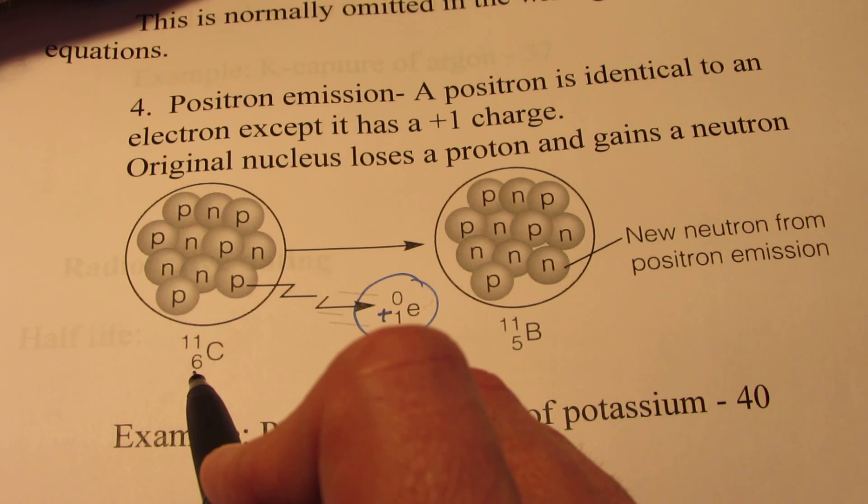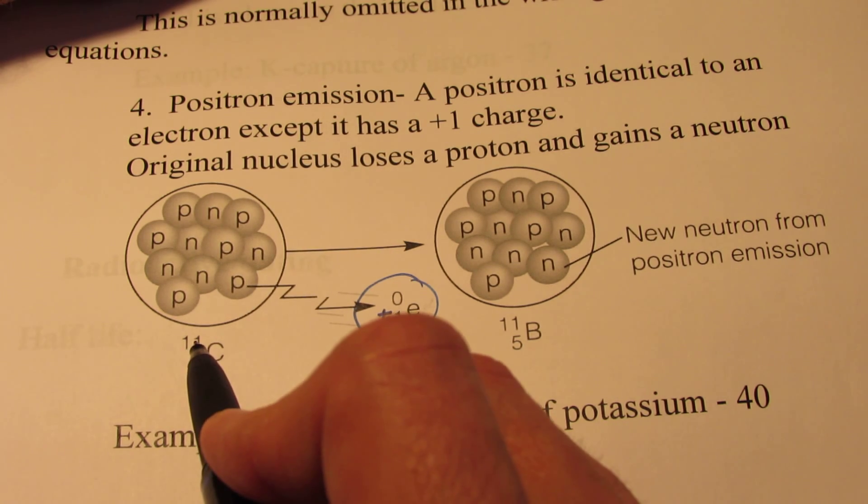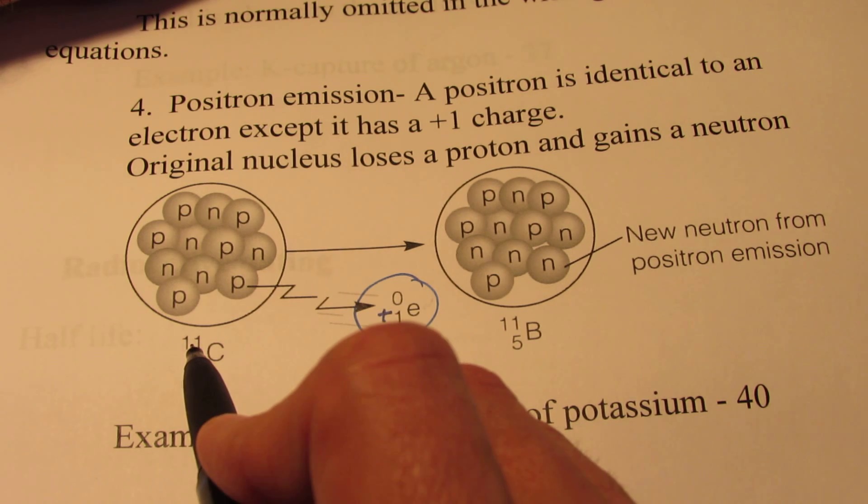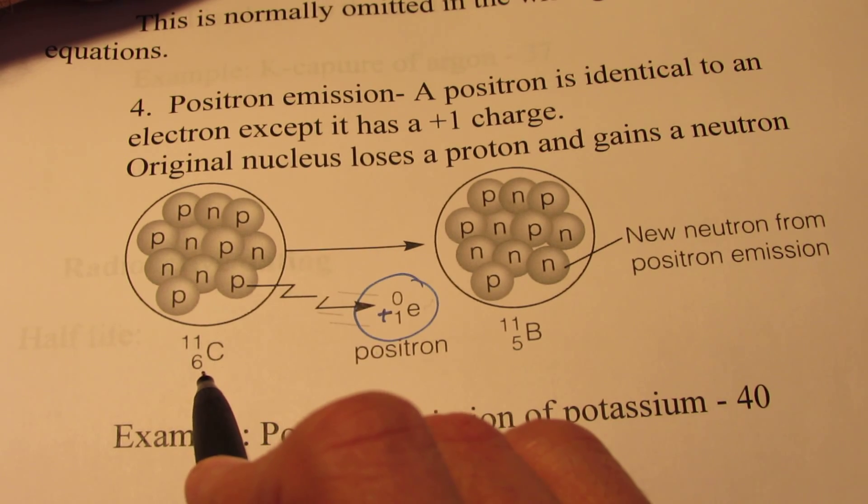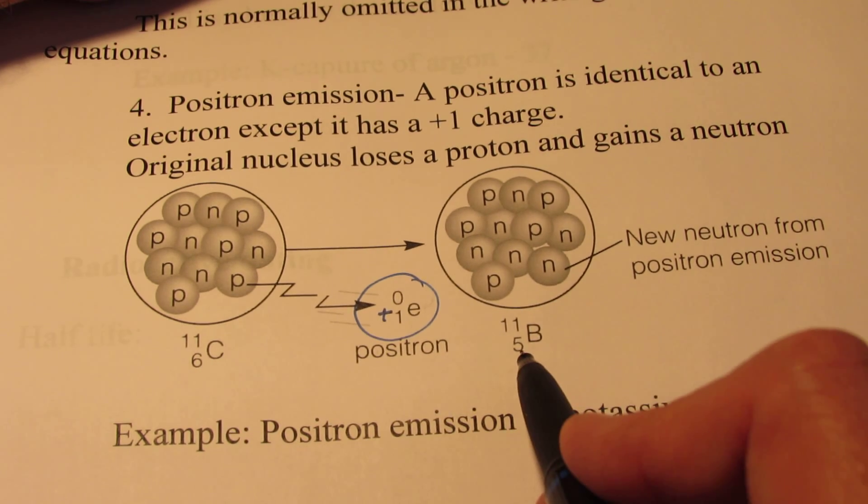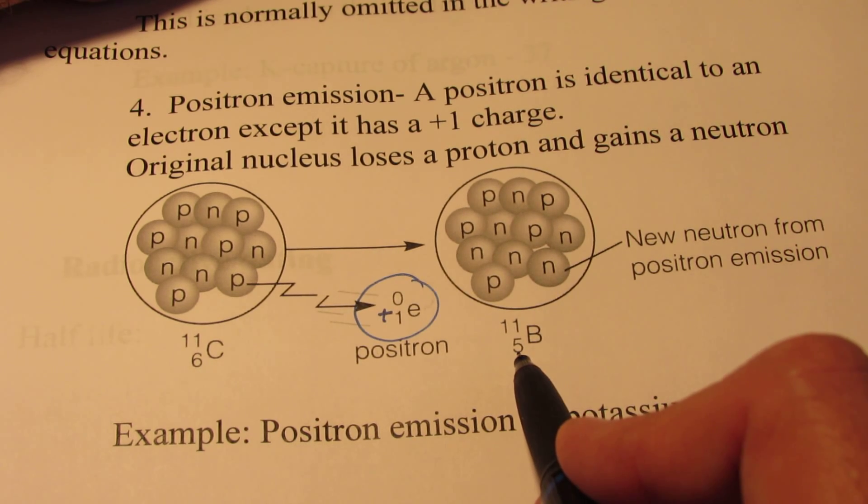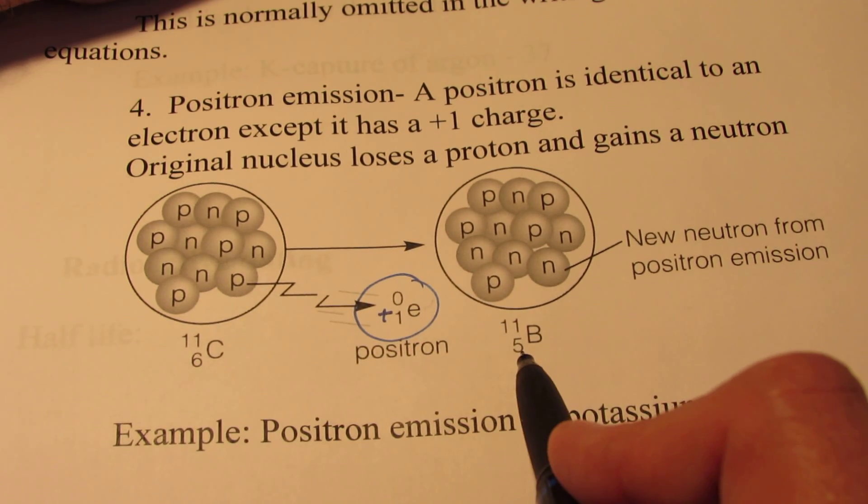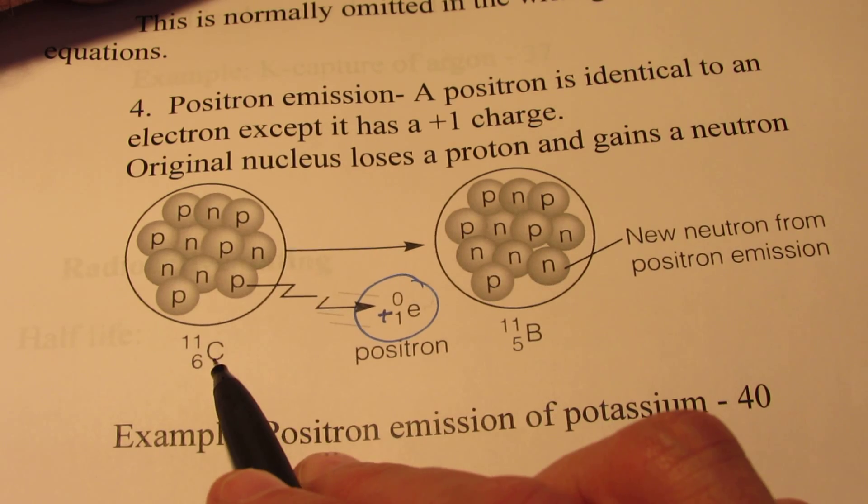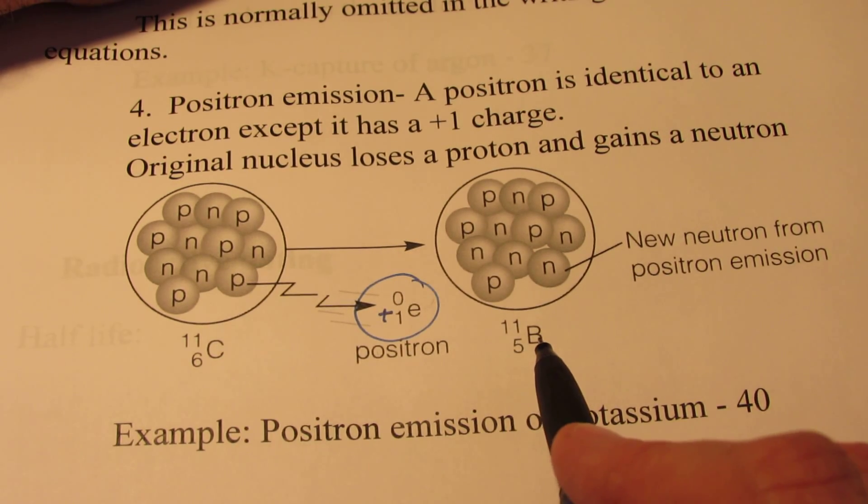So if we have carbon-11, it has 6 protons and 5 neutrons. That's where the 11 comes from. Remember, the mass number is protons plus neutrons. If 6 of them are protons, the other 5 must be neutrons. And a proton turns into a neutron. So the atomic number is going to go down by 1 because it's turned into a neutron. The mass number stays the same. The atomic number goes down by 1. So we transmutate carbon-11 into boron-11.